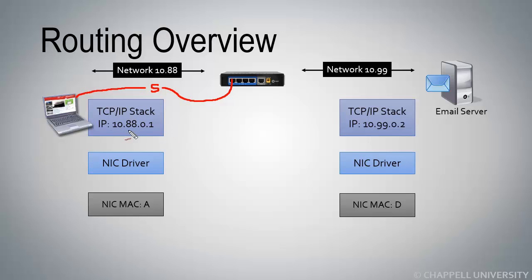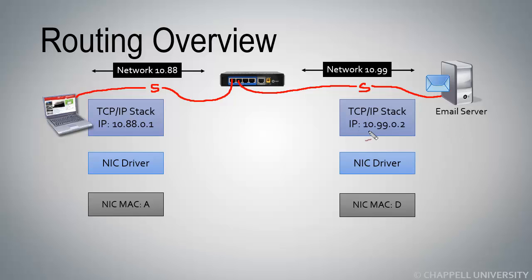Our client's IP address is 10.88.0.1 and its hardware address is MAC address A. From another port on the router, a cable comes out to a switch in front of the server. We'll connect from that switch over to our email server. Our server has the IP address 10.99.0.2 and hardware address D. Let's look at what happens as traffic flows through the TCP/IP stack down to the network interface card, through the router's first port, and out the second port heading toward the server.